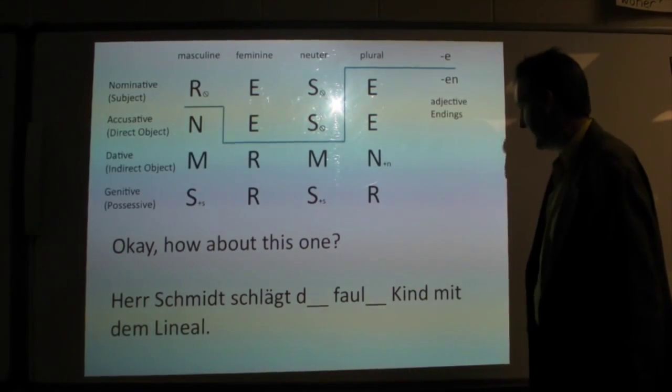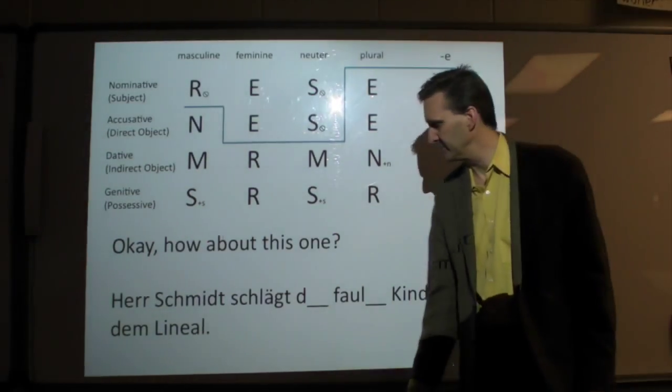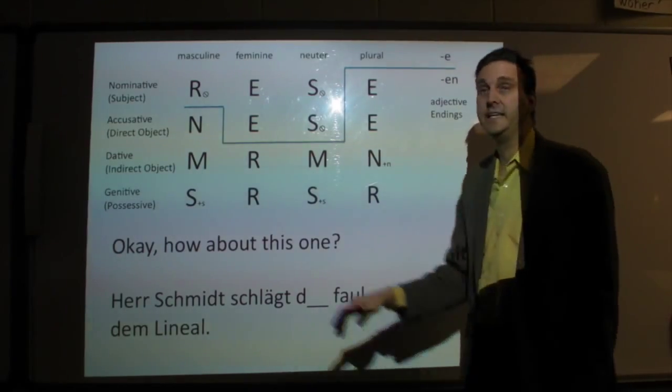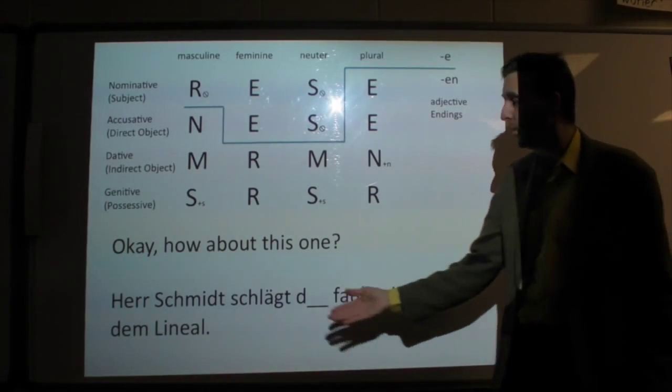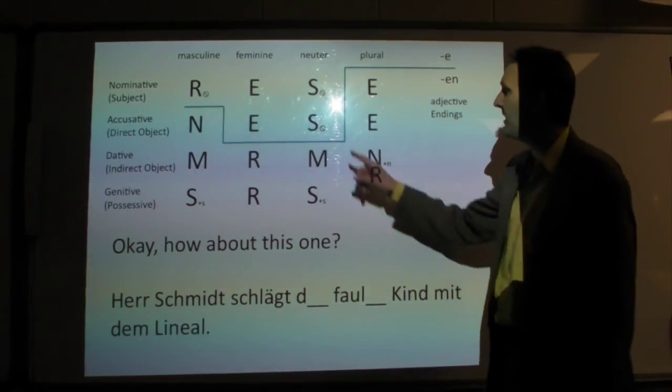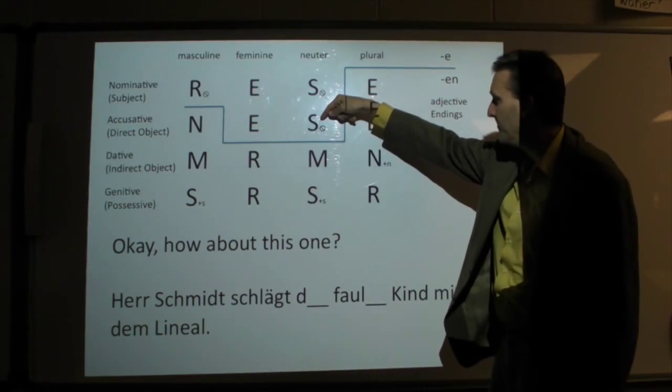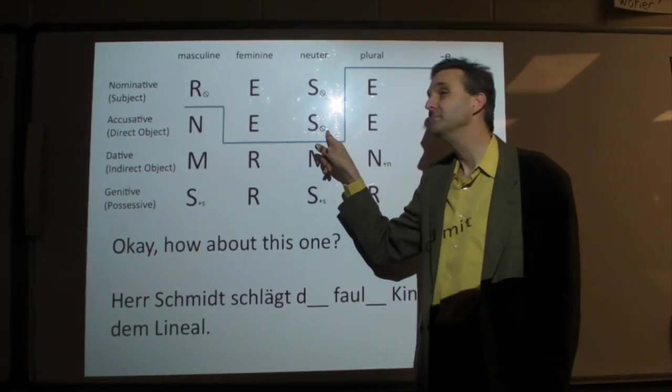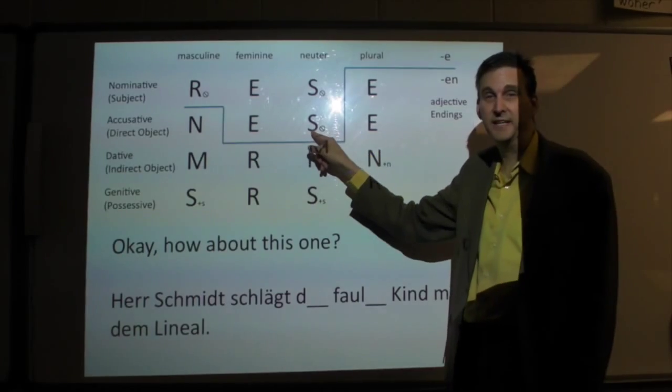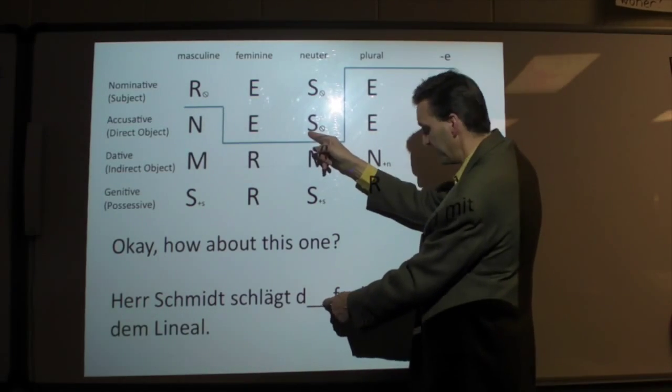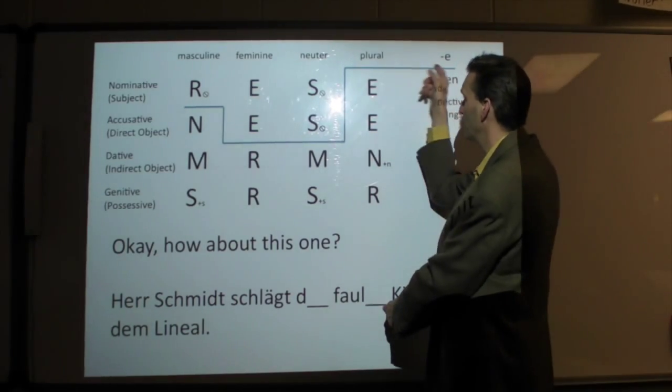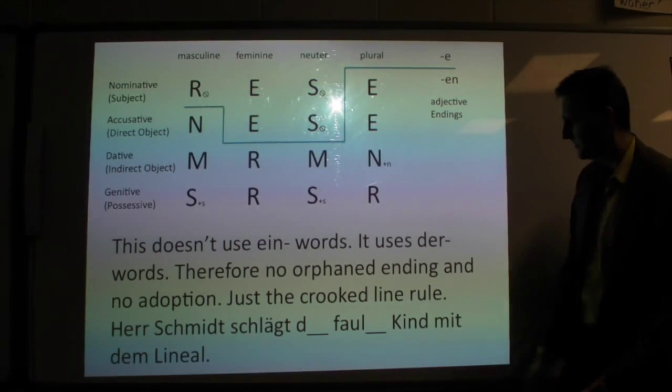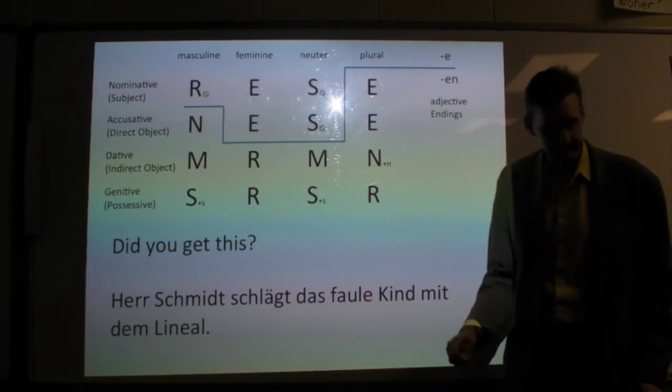How about this one? Mr. Smith hits the lazy kid with the ruler. I love a sentence like this. So, the kid here is neuter, and we know that that's functioning as the direct object. He's being hit. So, what's being hit? The child. The child is going to be the direct object in here, and then there's an orphan sign here. The question is, does this der word orphan its endings? No, it doesn't. So, we keep the S. We didn't orphan it. We keep the S. And then for faul, we again just follow the crooked line rule. Faule. So, schlägt das faule Kind mit dem Lineal.